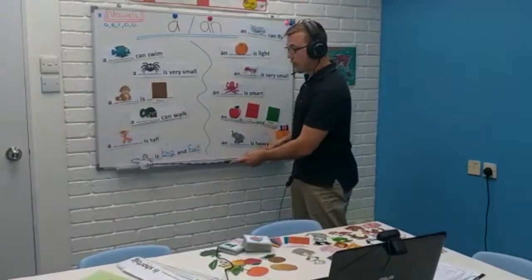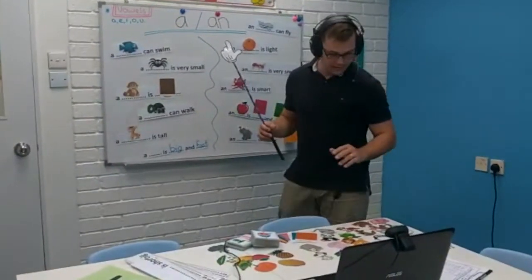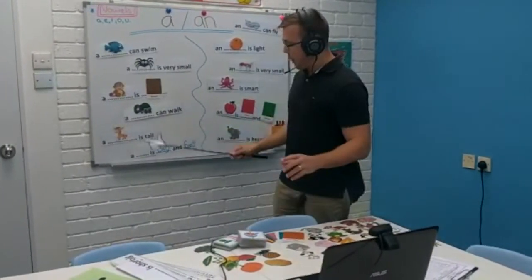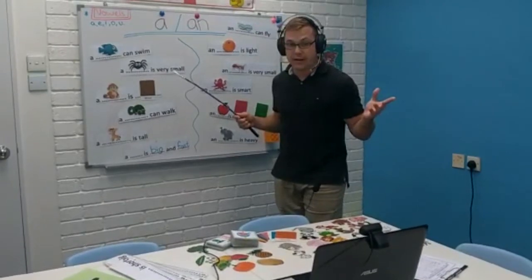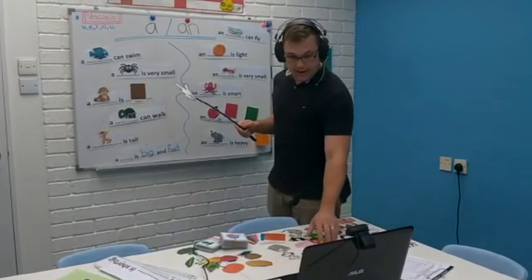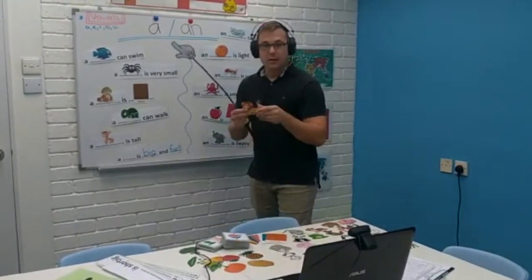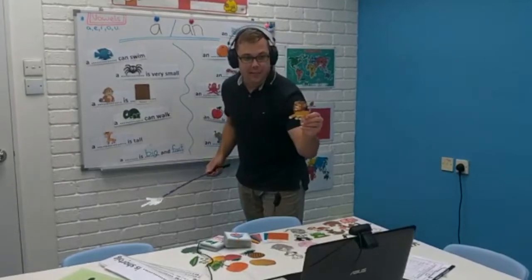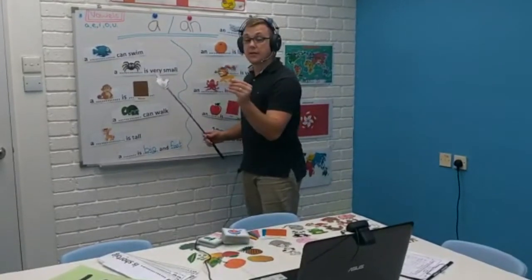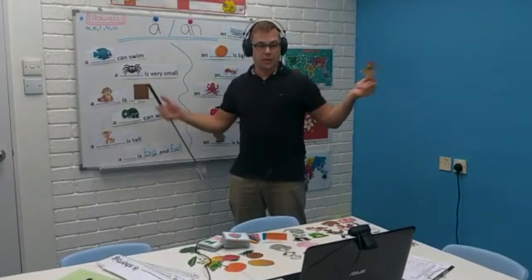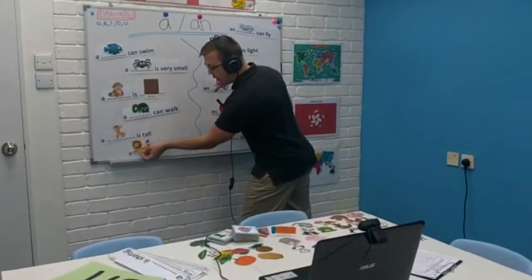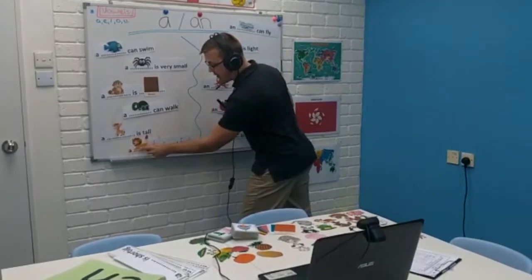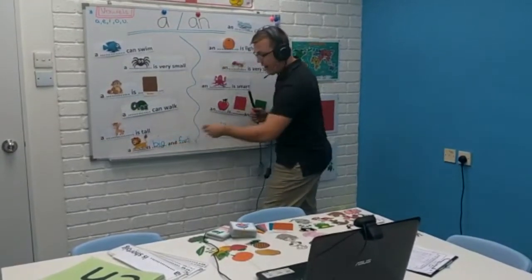Now, what can we put for the last one? What is big and fast? How about a lion? What letter does lion start with? L. Yes, very good. So, a lion is big and fast. Very good.